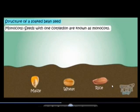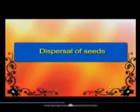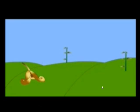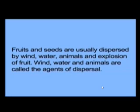Now we will start with the dispersal of seeds. The main function of fruit is to help the seed to spread — this is called the dispersal of seeds. Dispersal is very important to ensure that seeds are spread into new areas so that new plants will not be crowded. Seeds are usually dispersed by wind, water, animals, and expulsion of fruits. Wind, water, and animals are called the agents of dispersal.